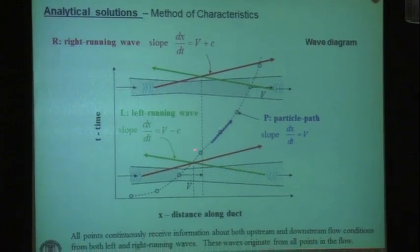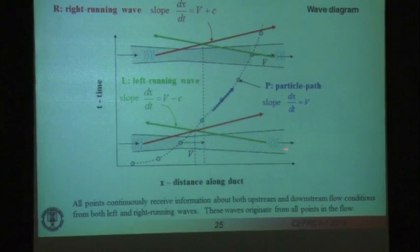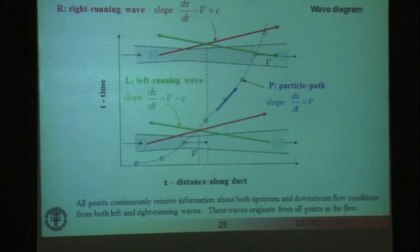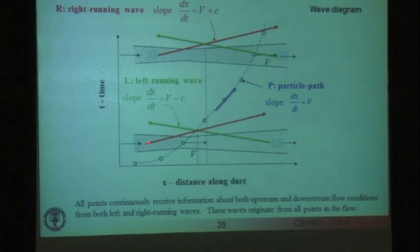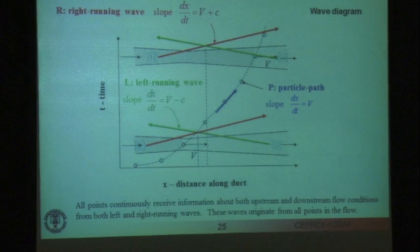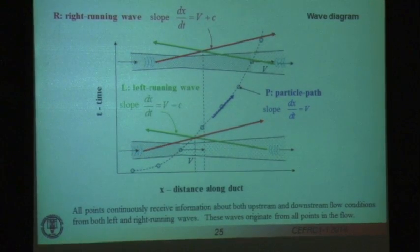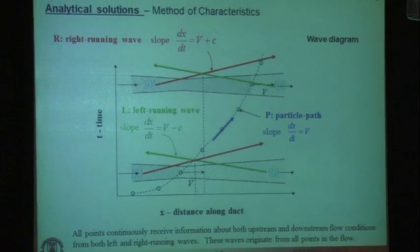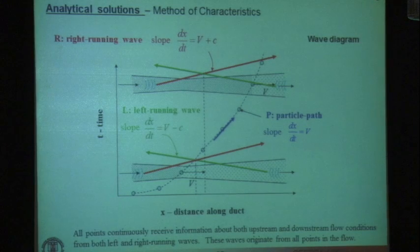The particle travels because there's a pressure gradient across the duct telling it to flow in order to equalize pressure. That information is communicated through pressure waves traveling at the speed of sound. Any point in the flow continuously generates pressure waves. Right-running waves have a slope equal to the fluid velocity plus the sound speed, and left-running waves (shown in green) travel at the fluid velocity minus the sound speed.